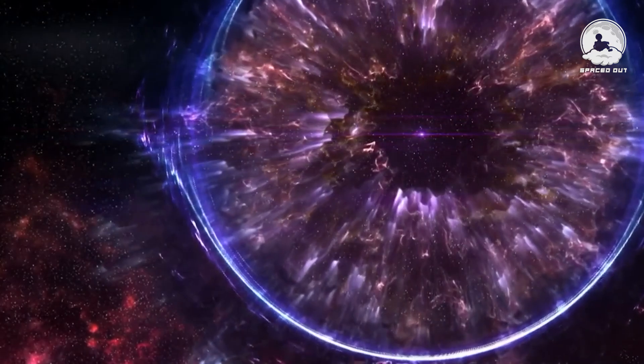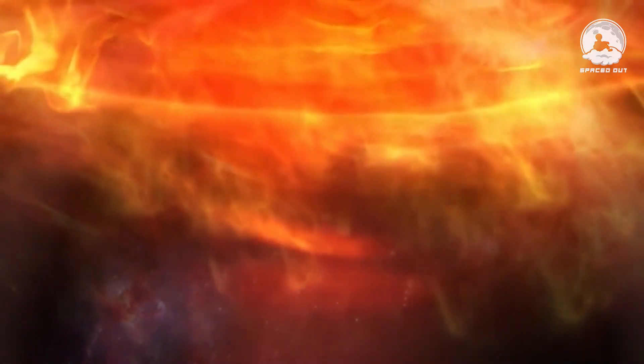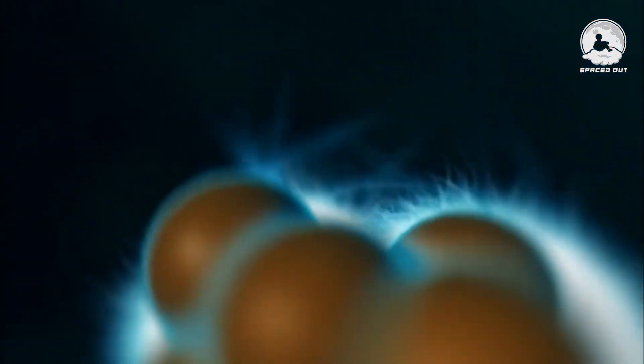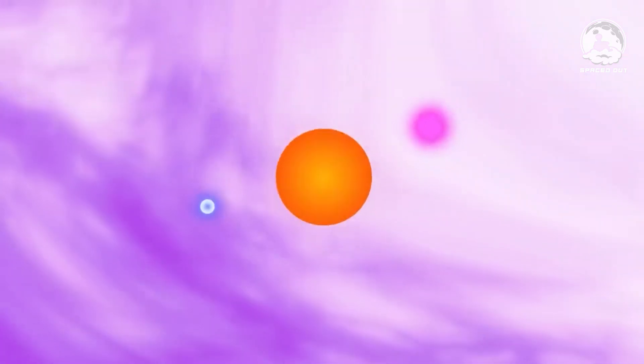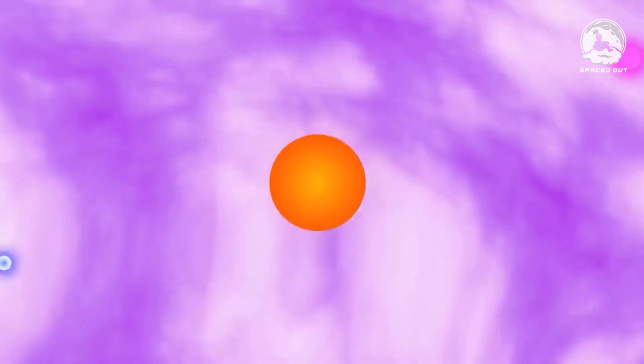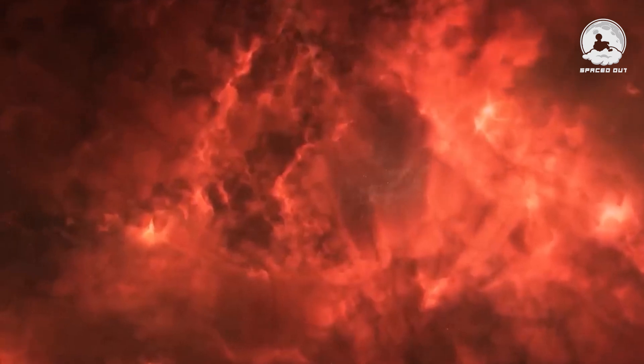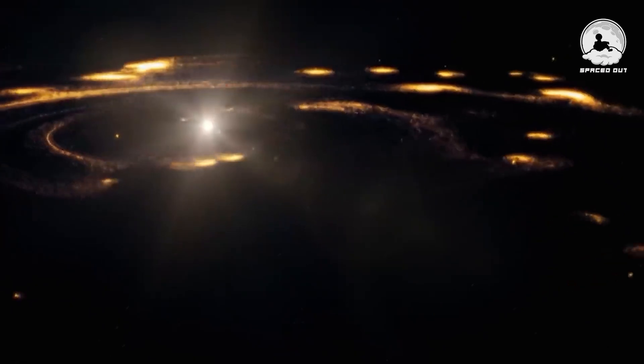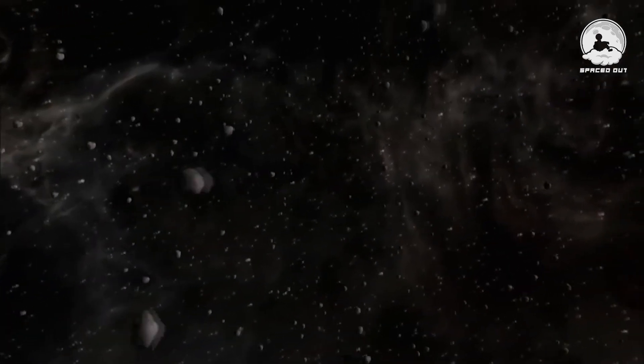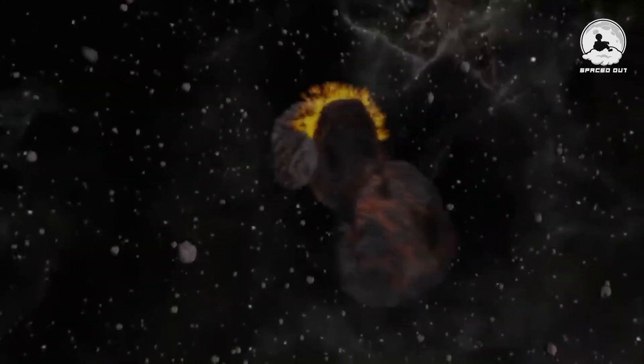Over the span of millions of years, the atoms forged in the cosmic furnaces of neutron stars disperse into the vastness of the galaxy. Some of these atoms find their way into interstellar clouds, where gravity brings them together once more, giving rise to the birth of new stars and planets. This cyclical process repeats itself over and over. Our own solar system stands as a testament to this cosmic recycling. The elements crafted in the crucible of neutron stars over a journey spanning 13 billion years have played a pivotal role in shaping the entire technological marvel of our modern world.